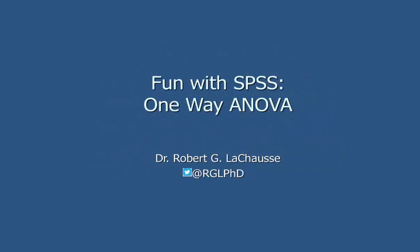Remember, there are four steps in testing a hypothesis, and we use a one-way analysis of variance when we want to compare more than two group means. In the data file, you need two variables: an independent variable that is a grouping variable, and a dependent variable measured at the ratio or interval level. Make sure that you write up your results. If you have any questions, stop by during office hours.